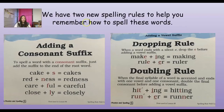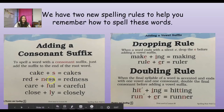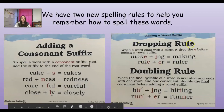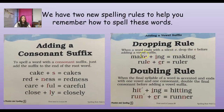So I know this is kind of tricky, so we're going to explain it. We have two new spelling rules. When you're adding a consonant suffix, just add the suffix to the root of the word. Look: cakes, redness, careful, closely - all you do is add that suffix at the end. If we're adding a vowel suffix, when a word ends with the silent E, drop the E before adding the suffix. So 'make' has that silent E - drop the E, add ING, it turns into 'making.' 'Rule' has a silent E - drop the E and it turns into 'ruler.' So: consonant suffix, just add it together. Vowel suffix - if it's got that silent E, you drop the silent E and then add the suffix.